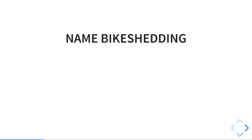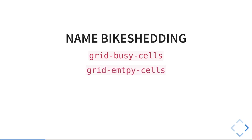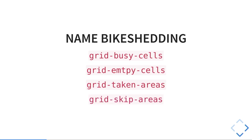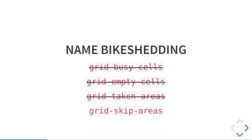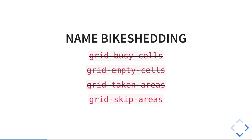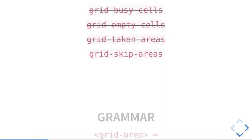One part is either we have a very clear name for the property, or there is some bikeshedding to find the proper name. How can we call this property — maybe grid-busy-cells, or maybe grid-empty-cells, or grid-taken-areas because maybe it's an area not just a cell, or grid-skip-areas. I chose the last one — I like it. So for this talk we are going with that, but it might vary.